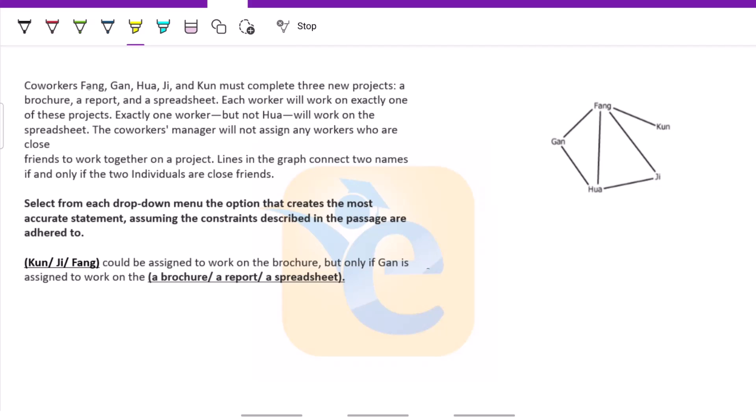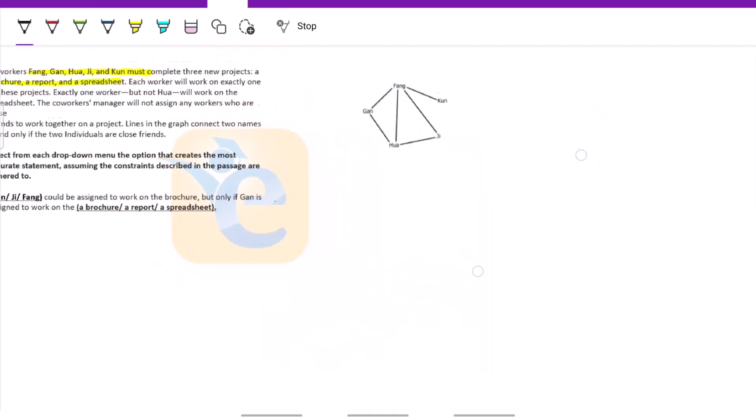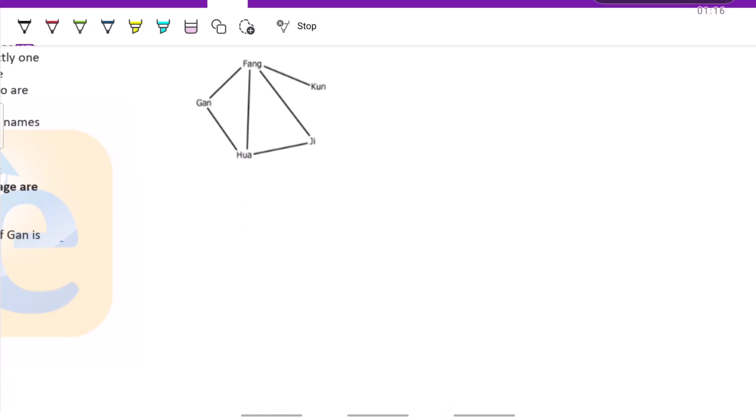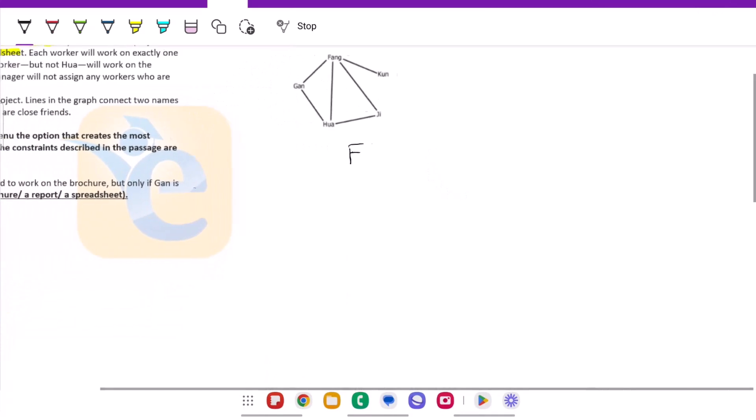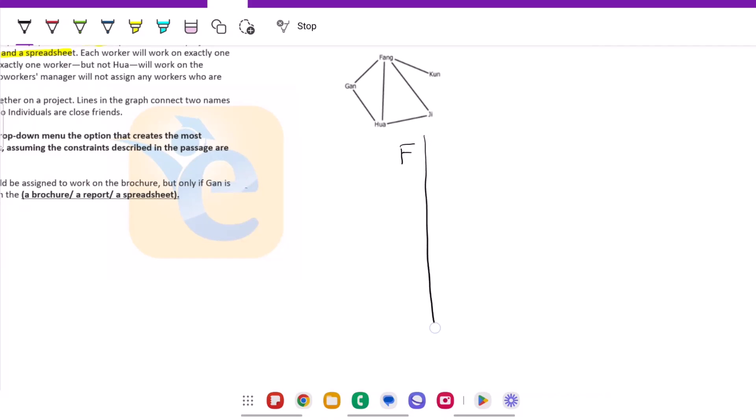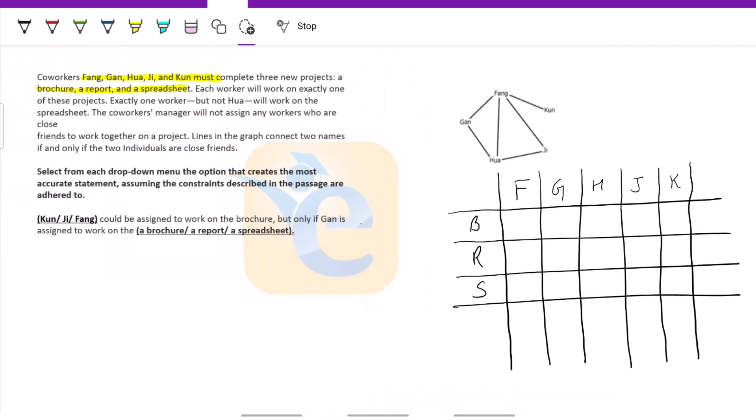So what do we have here? We have five coworkers and three projects, right? So first of all, we need to tabulate this. I'll be putting just the letters. So here I have tabulated my data. Let us move ahead.